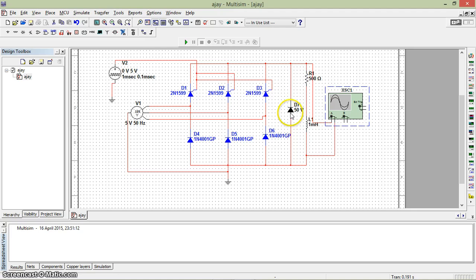Here we used a freewheeling diode and a resistive and inductive load. This is a CRO and we have used this for triggering.